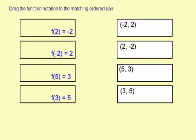This ordered pair represents an input and output for a function. The negative 2 is the input. So in our function notation, the input goes in here inside the parentheses.